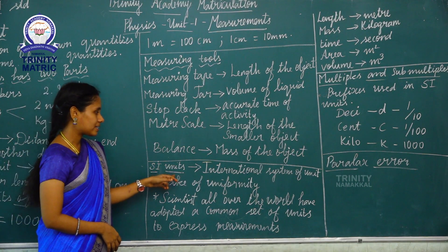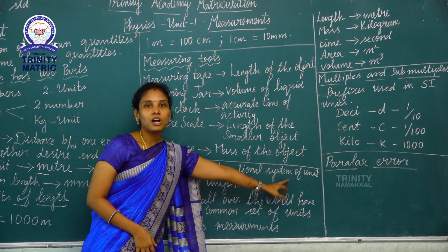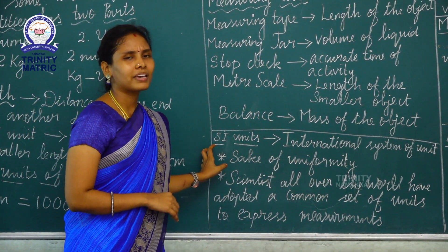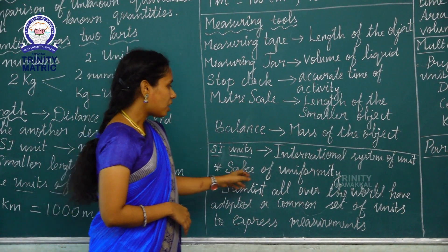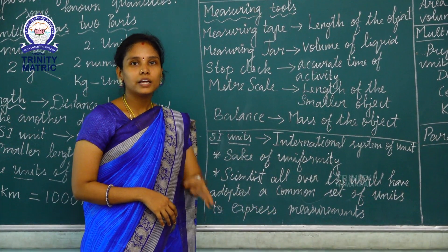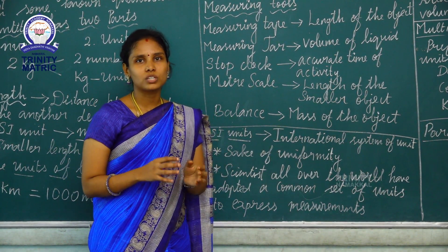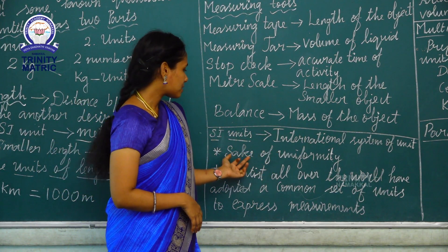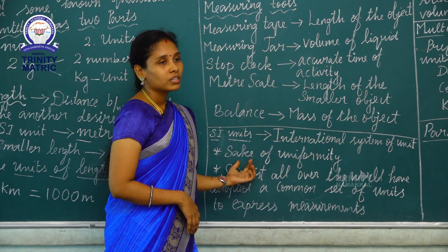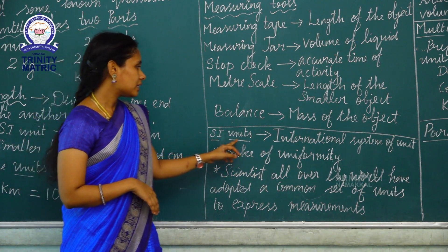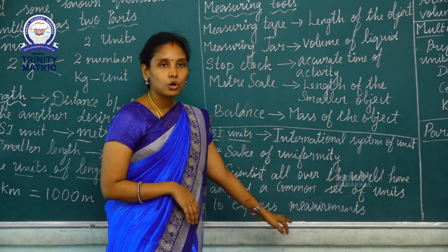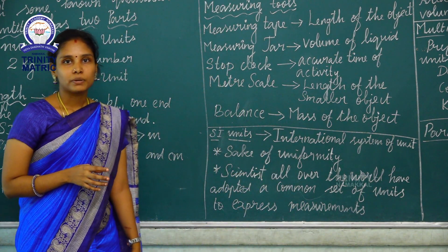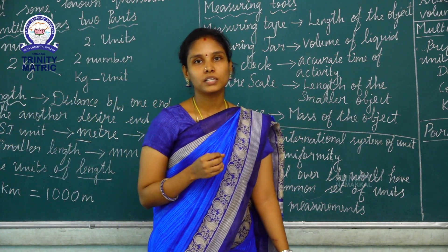Next, SI units. SI unit means international system of units. Why do we need SI units? For the sake of uniformity. Scientists all over the world have adopted a common set of units to express a measurement. That is why scientists use units for measurements — one common measurement unit.